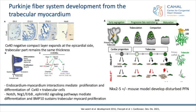Last but not least, the Purkinje fiber develops from the trabecular myocardium. During development, the compact part becomes bigger and bigger, and the connexin 40-positive trabecular myocardium stays more or less in the same volume and eventually part of it develops into Purkinje fibers. NKX2.5 plays a very important role: in a heterozygous NKX2.5 mouse you get a deficient, abnormal Purkinje fiber network, so NKX2.5 regulates Purkinje fiber formation from the trabecular myocardium.